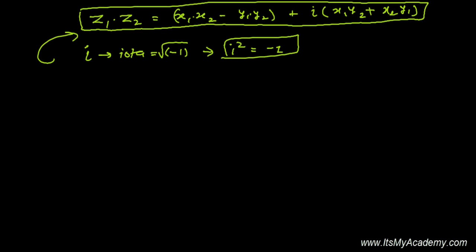So iota times iota - i squared is iota times iota. Iota can be written as 0 plus i times 1, and again 0 plus i times 1. This is just like two complex numbers: one complex number times another complex number.